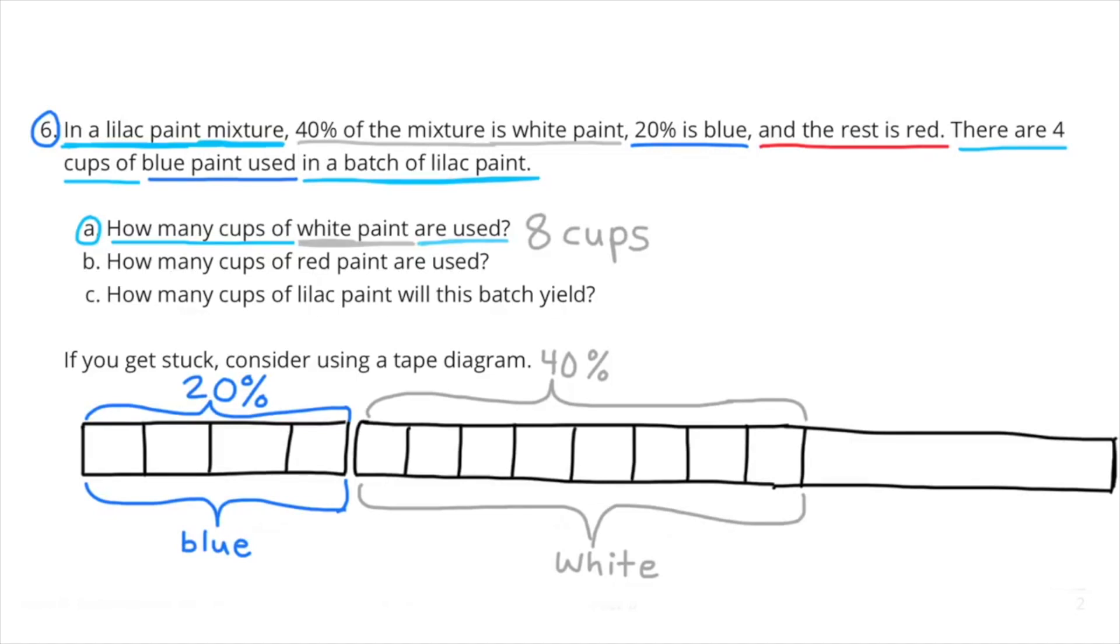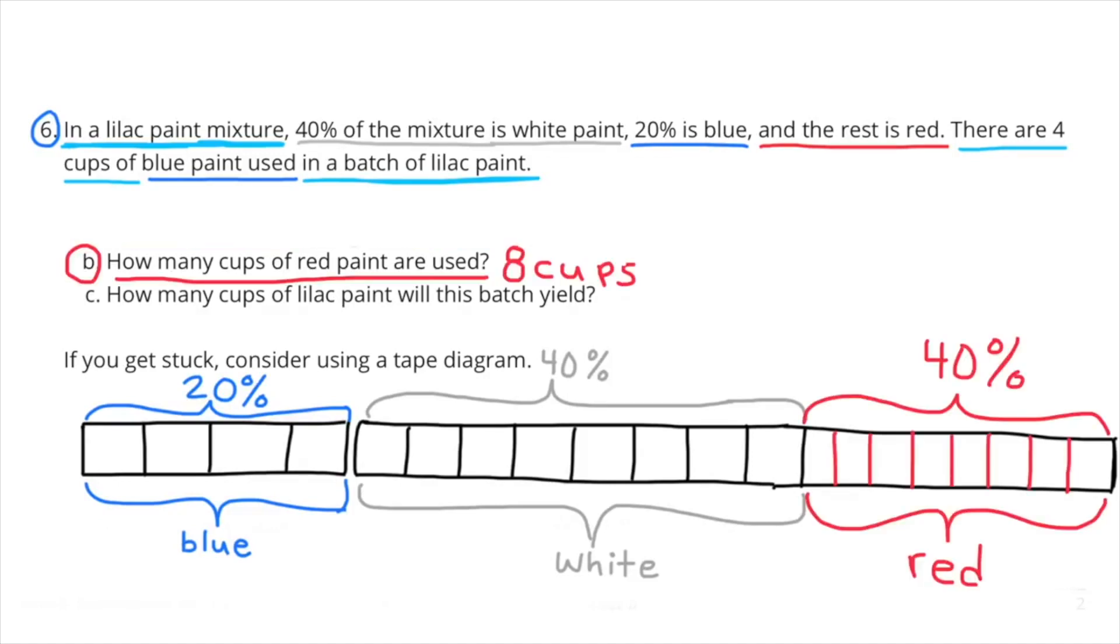B: How many cups of red paint are used? Well, the rest of it is red. So if there's 40% white, 20% blue, that's a total of 60%. So 100% of the batch minus 60%, or minus the blue paint and the white paint, that's going to equal the red paint. So 100% minus 60% equals 40%. 40% would represent 8 cups, just like it did with the white paint. My drawing is not to scale, obviously, because the 40% red paint looks a lot smaller than the 40% white paint. Maybe you could do a better job in your drawing than I did.